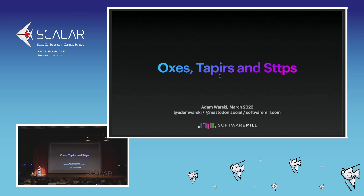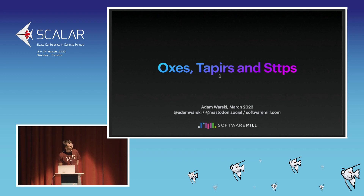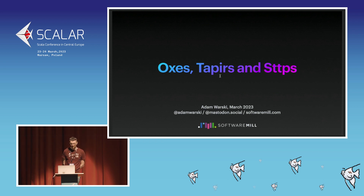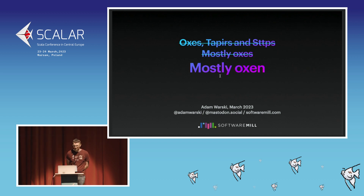My original idea for the talk was to do an update on our open source Scala ecosystem. As a company, we develop a couple of open source projects in Scala. I want to talk about Tapir, STTP, and Ox, which is our new project. STTP is our HTTP client. Tapir is a library for describing endpoints which you can expose as a server, consume as a client, or document using OpenAPI. But when I did a dry run it would take about an hour, so I decided to just focus on the newest one, which is Ox.